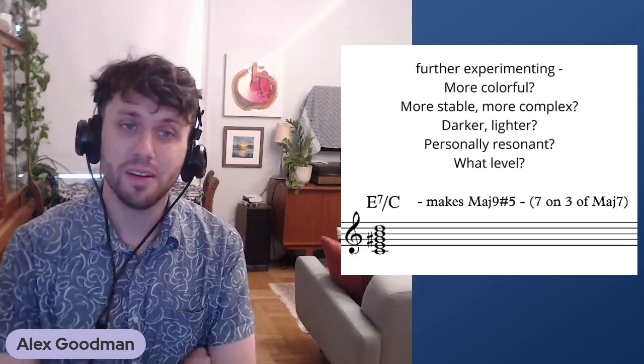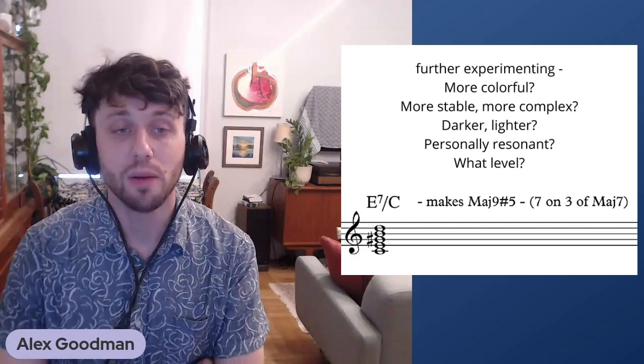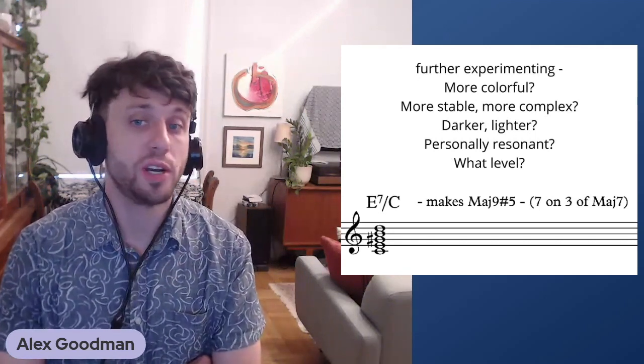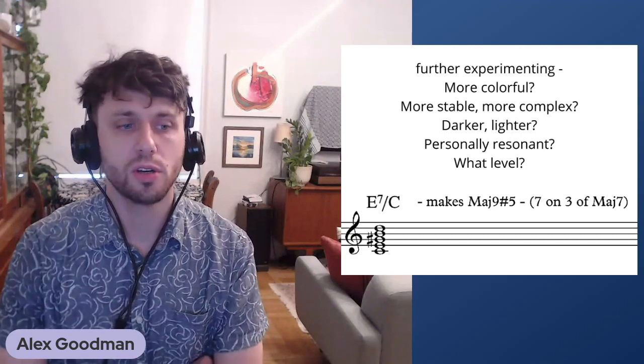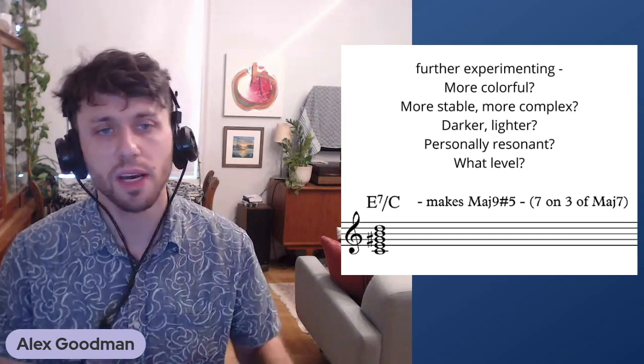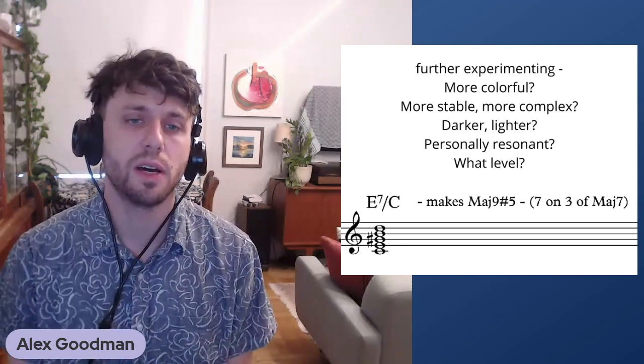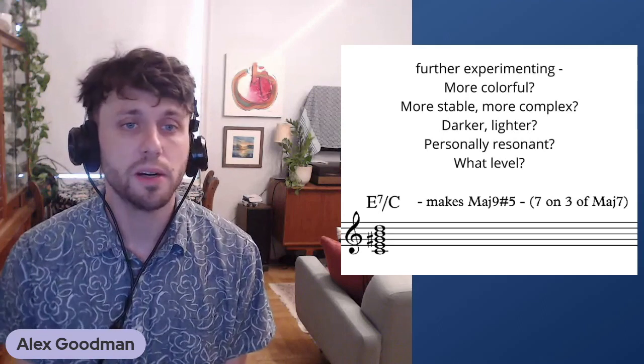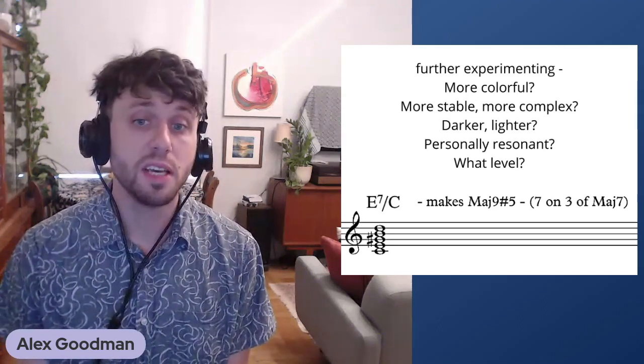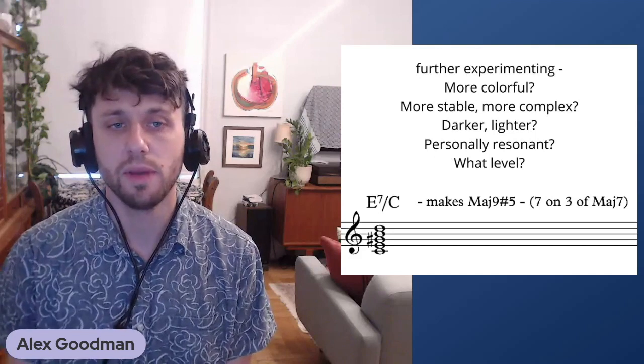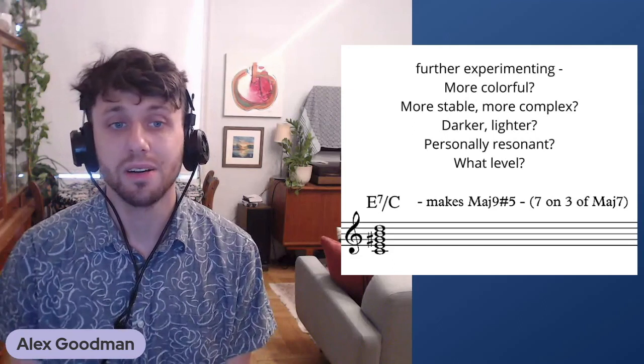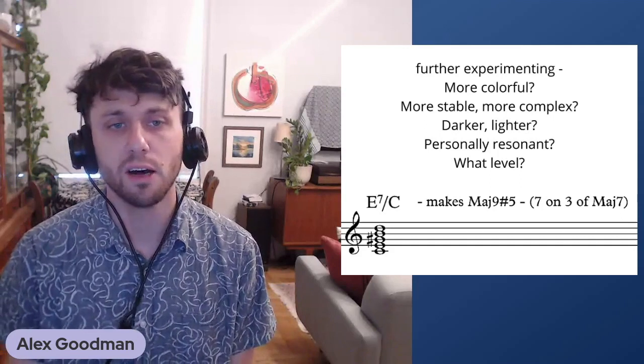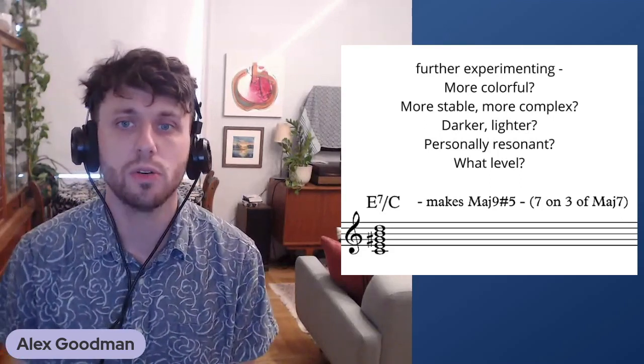Taking this maybe to the next level, if you take an E7, a really basic chord dominant, and you put that on the third, all of a sudden now you have a major nine sharp five. So you're implying that sharp five sound, which maybe comes from a different kind of tonality. When I think of a major seven sharp five, I'm thinking of that sound coming from harmonic minor or melodic minor.